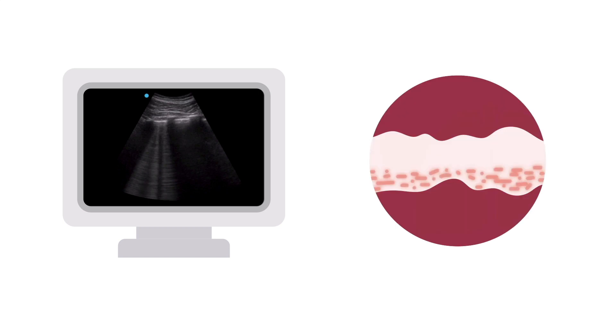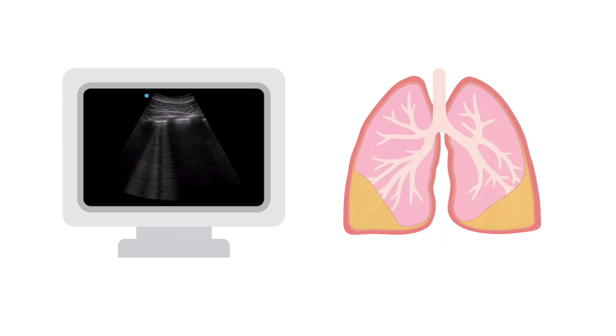Sonographic beelines are produced by diseases that affect the interstitium of the lung, so we can see them in a range of diseases. Pulmonary edema from congestive heart failure is a classic example. Both congestive heart failure and COVID-19 can produce diffuse bilateral beelines.